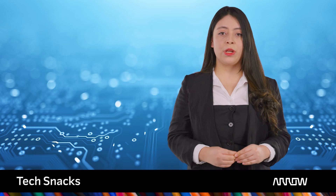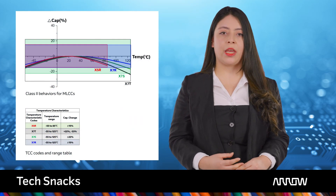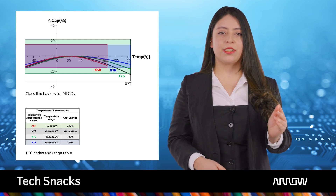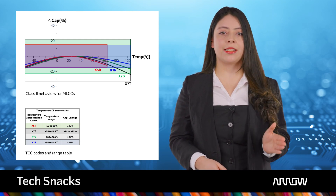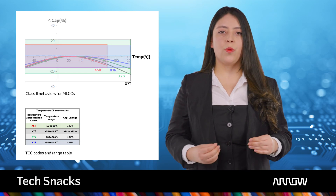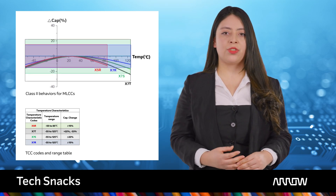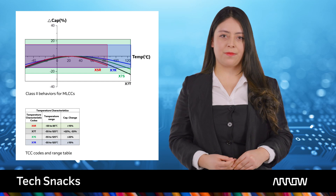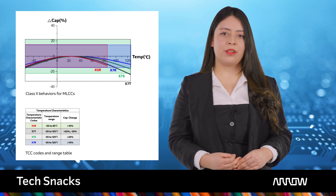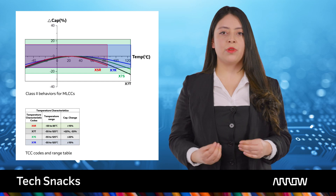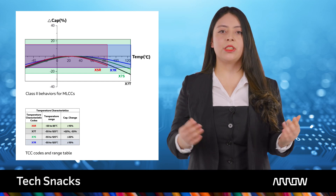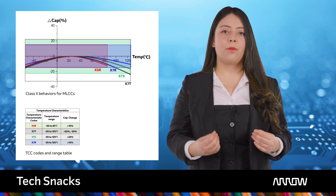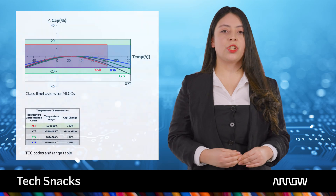In the following graph, we can observe the Class 2 behaviors for MLCC, especially for the X7 family — X7R, X7S, and X7T. On the X-axis we can visualize the temperature in degrees Celsius, and on the Y-axis the capacitance percentage change. As temperature increases, the percentage of capacitance decreases. How the TCC codes and range tables behave depends on the temperature characteristics for each code.